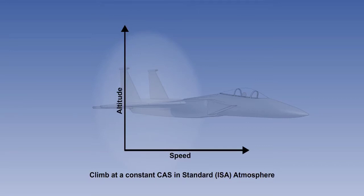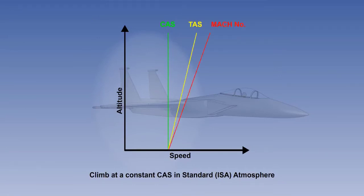The best way to show this is to create a graph. Looking at the graph, we can see that if the climb is carried out at a constant CAS, the TAS will increase with altitude, and the Mach number will increase even more than the TAS.